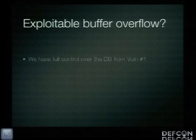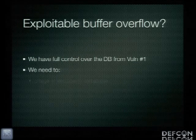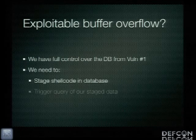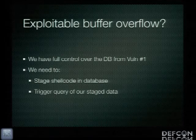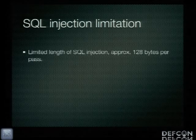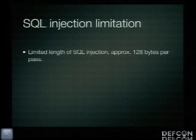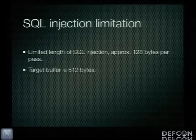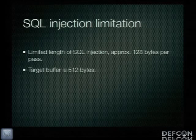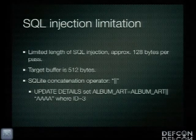Do we have an exploitable buffer overflow? We have full control over the database from vulnerability number one. To exploit this buffer overflow, we need to somehow stage our shellcode in the database and then trigger a query to pull out the shellcode and cause it to execute. We have a limitation with our SQL injection though — we need to limit it to about 128 bytes per injection when accounting for SQL and HTTP syntax overhead. We're trying to overflow a buffer that is 512 bytes big. Fortunately, SQLite gives us the concatenation operator, so it's just a matter of making multiple passes and building up that string as long as needed.